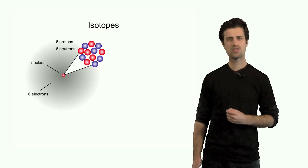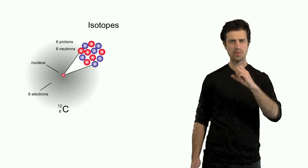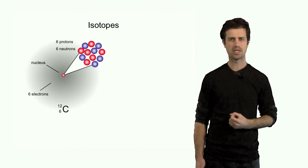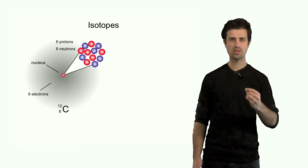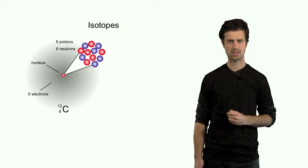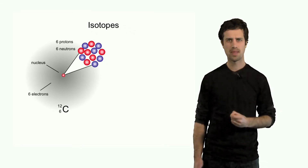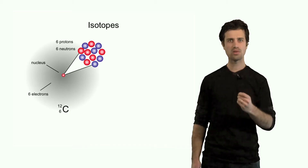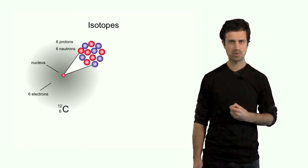We write this atom as follows. Capital C is the abbreviation for carbon. The superscript twelve indicates the sum of the protons and the neutrons, which is six plus six in this case. The subscript six indicates the number of protons, and the number of protons in fact defines which element we are talking about.